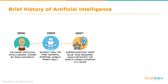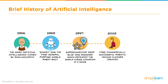Moving forward to 1997, the supercomputer Deep Blue was designed, which defeated the world's chess champion in a game. This was the first time we actually saw a computer using logic to beat a human at something logical — in this case, a game. It was a huge milestone by IBM. Let's jump to 2002, when we had our first commercially successful robotic vacuum cleaner.